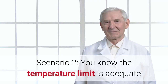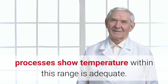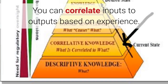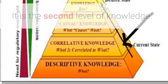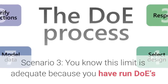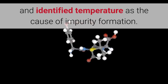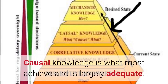Scenario two: you know the temperature limit is adequate because your experience from 20 years on similar processes shows temperature within this range is adequate. You can correlate inputs to outputs based on experience. It is the second level of knowledge. Scenario three: you know this limit is adequate because you have run DOEs and identified temperature as the cause of impurity formation. You have scientific data to demonstrate cause and effect. Causal knowledge is what most achieve and is largely adequate.